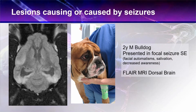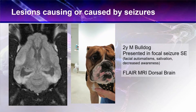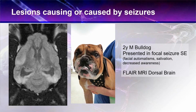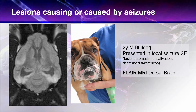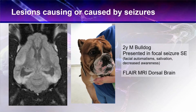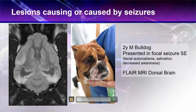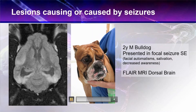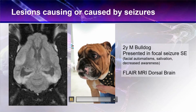Here we have an example. This is a two-year-old bulldog that was presented in status epilepticus with focal seizures. Some of you may be surprised that this dog is in status epilepticus. The local out-of-hours clinic actually discharged this dog without any drugs, despite the fact he was in status epilepticus, because they didn't recognize that this was continuous seizure activity.